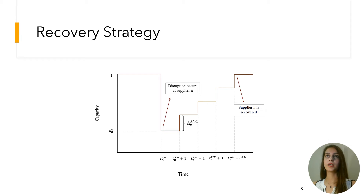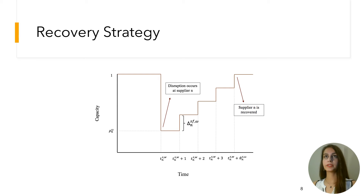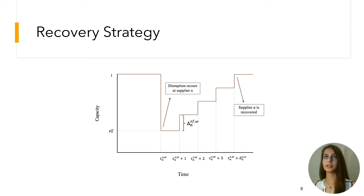As this is a multi-period model that allows multiple disruptions to happen at different times throughout the planning horizon, it's helpful to understand how a node recovers after disruption. Consider a supplier or facility operating at 100% capacity before disruption. Once a disruption happens, capacity drops to a reduced percent and increases over time via a step-function recovery until fully restored. Since multiple suppliers and facilities can be disrupted simultaneously or at different times, multiple nodes may be in different stages of recovery and operating capacity at any point within the planning horizon.